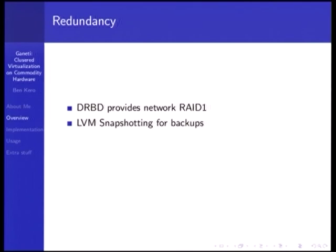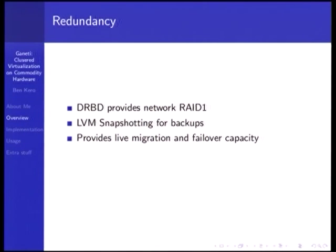DRBD provides network RAID 1, so even if your nodes don't have RAID you still have redundancy over the network. You can have multiple levels of RAID on hardware as well. This avoids a lot of downtime if you have a disk failure or even a host failure. It uses LVM snapshotting for backups, allowing online copy-on-write snapshots, and provides live migration and failover capacity.